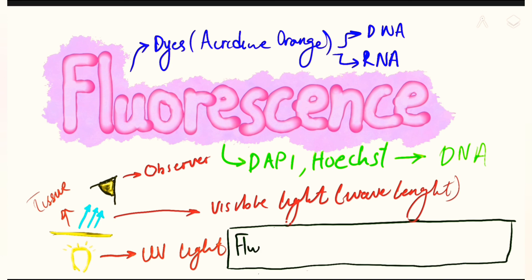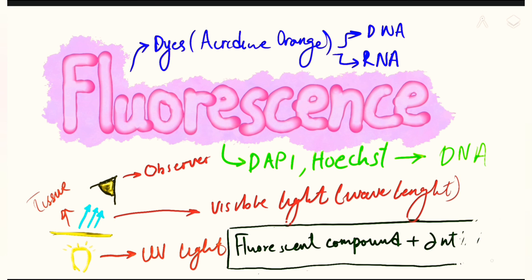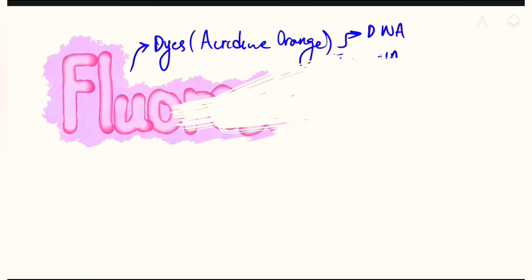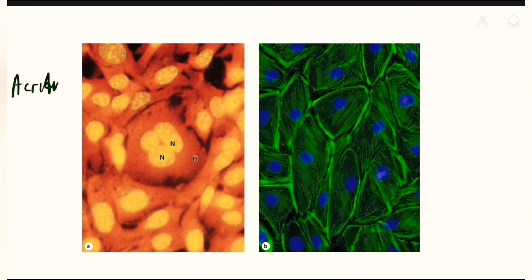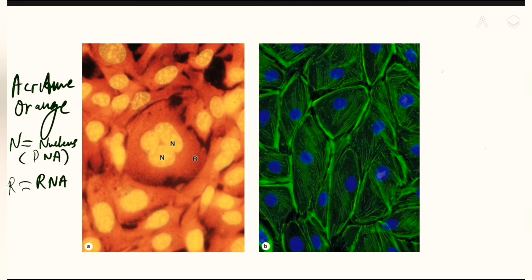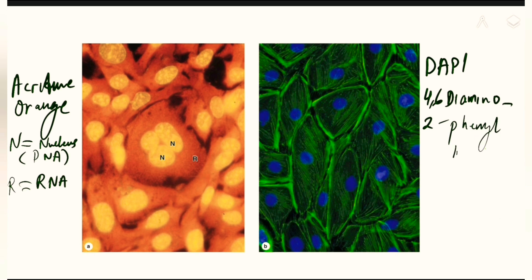There are also some fluorescent compounds that can be added to antibodies, allowing us to study the tissue immunologically — a method called histoimmunology. Here is an image: on the left is a preparation stained with acridine orange, showing the nucleus with DNA (labeled N) and the cytoplasm with RNA (labeled R). On the right is the DAPI stain — short for 4',6-diamidino-2-phenylindole — a fluorescent substance that stains only the DNA portion, appearing as dark blue dots as seen in the image.